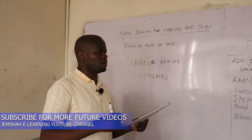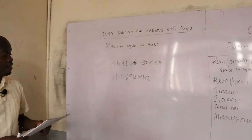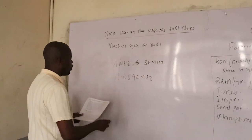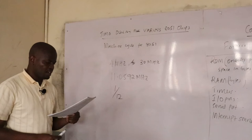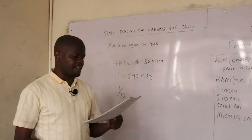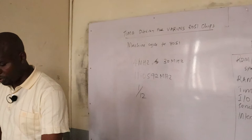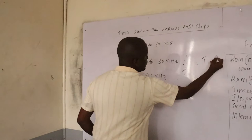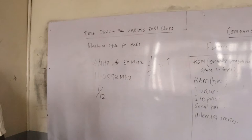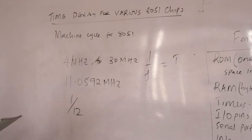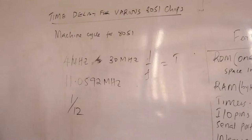When calculating the machine cycle for the 8051, we take 1 over 12 of the crystal frequency, then take its reciprocal in order to obtain the machine cycle. We calculate the machine cycle in terms of time, and we know the relationship between frequency and time: T equals 1 over F. That is what gives us the machine cycle of a particular system.